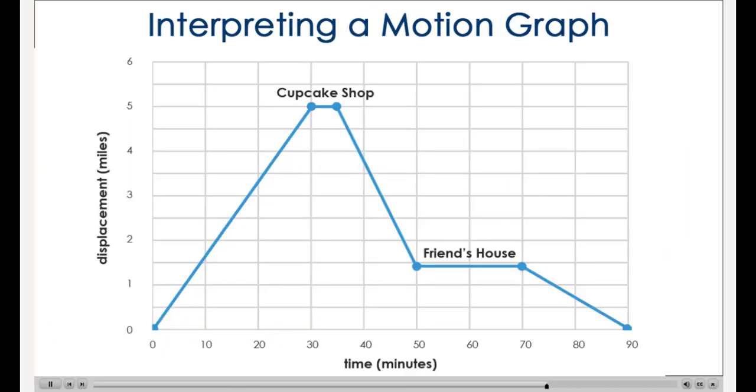Let's take a look at the information we can get from a motion graph. What was your displacement 10 minutes after you left your house? We can estimate the displacement at 1.6 miles. What is the displacement 32 minutes after you left your house?